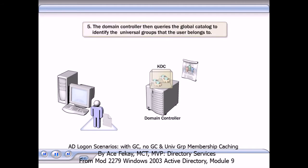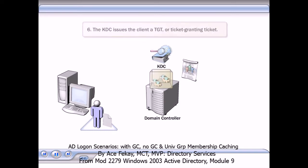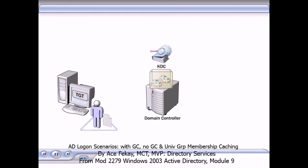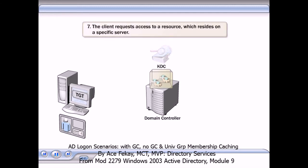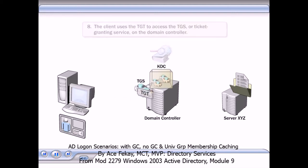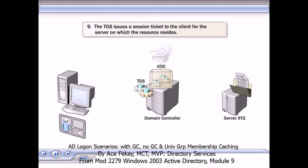The domain controller then queries the global catalog to identify the universal groups that the user belongs to. The KDC issues the client a TGT or ticket-granting ticket. The TGT contains the encrypted SIDs for the groups that the user is a member of. The user is now authenticated and can request access to resources. The client requests access to a resource which resides on a specific server, and the client uses the TGT to access the TGS or ticket-granting service on the domain controller. The TGS issues a session ticket to the client for the server on which the resource resides.